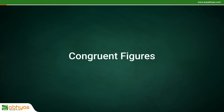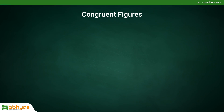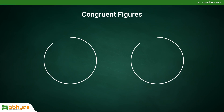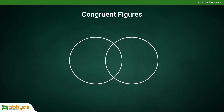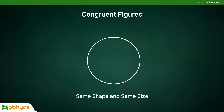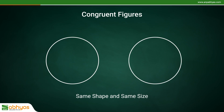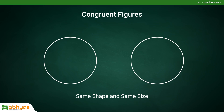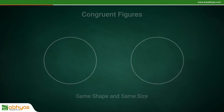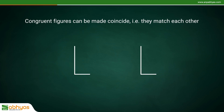Congruent figures. Two or more geometrical figures which have exactly the same shape and size are said to be congruent figures. Congruent figures can be made to coincide, that is, they match each other.